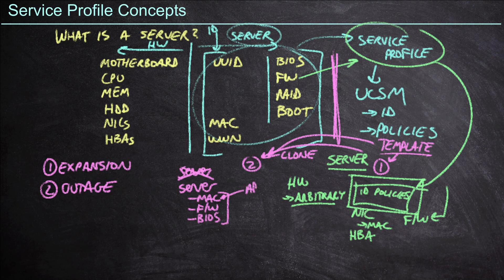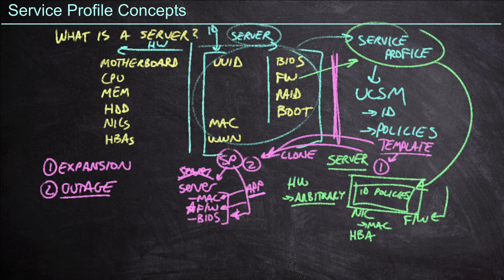If the application was licensed according to the MAC address, then that's going to be a major problem when the server comes back online. And am I going to take the time in an emergency outage scenario to update the firmware? This is why it's hard to manage firmware across an infrastructure, because things change over time. But now I apply the service profile to this server and it defines all of this for me — I can address the MAC address, the firmware, and the BIOS settings.